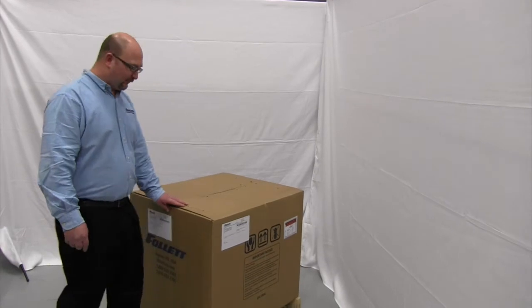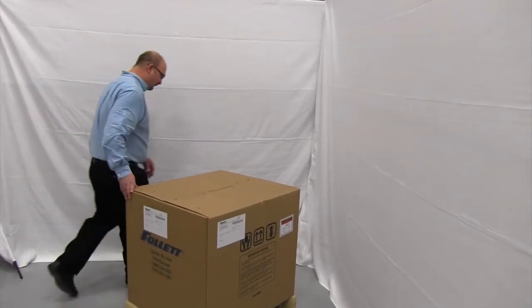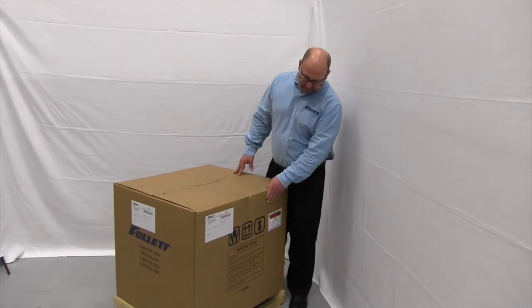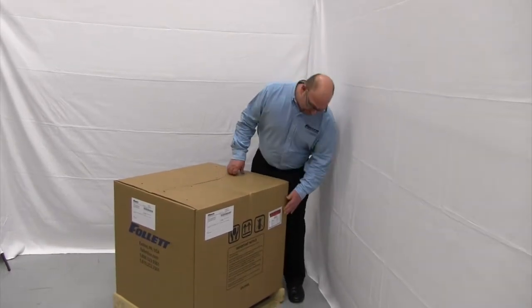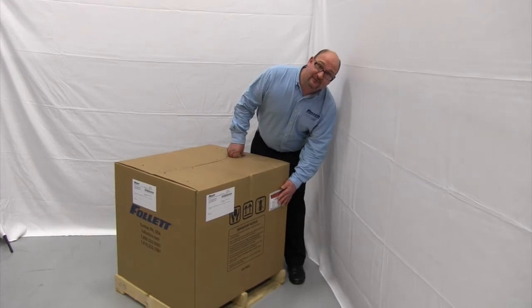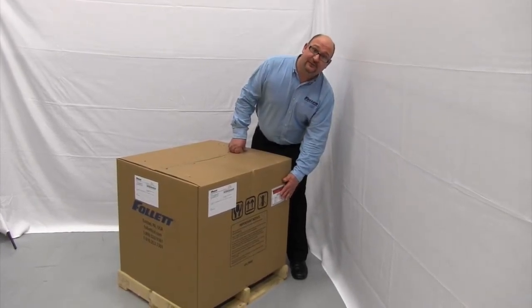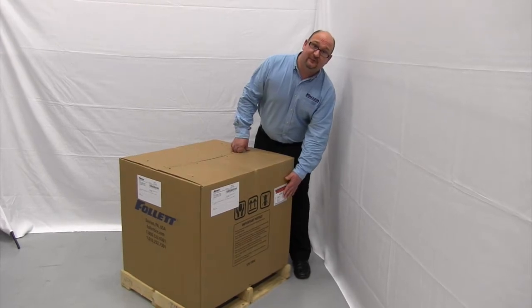First thing we're going to do is walk around the box to make sure there's no visible damage to either the pallet or the cardboard box that it comes in. Next, we're going to take this packing slip out of this protective envelope and check it against our order to make sure that we ordered and received the correct piece of equipment.